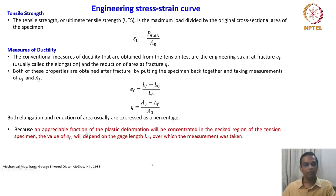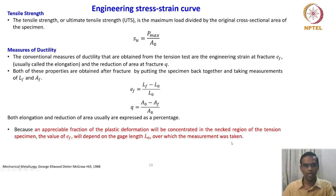Because an appreciable fraction of plastic deformation will be concentrated in the neck region of the tension specimen, the value of E_F will depend on the gauge length L_naught over which the measurement was taken. This is very, very important. Necking determines and captures some of the basic properties of the material, which we are going to examine.